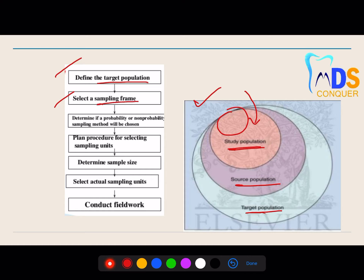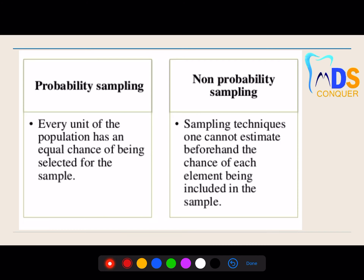Before selecting your sample, you need to arrange your framework — the qualities to be taken into consideration when picking a sample. Then determine whether you're planning for probability sampling or non-probability sampling, plan the sampling unit, and determine the sample size. Determining sample size is again a question that has to be answered for Paper One. Once you're done with all the basics, sampling techniques can be divided into two types: probability sampling and non-probability sampling.